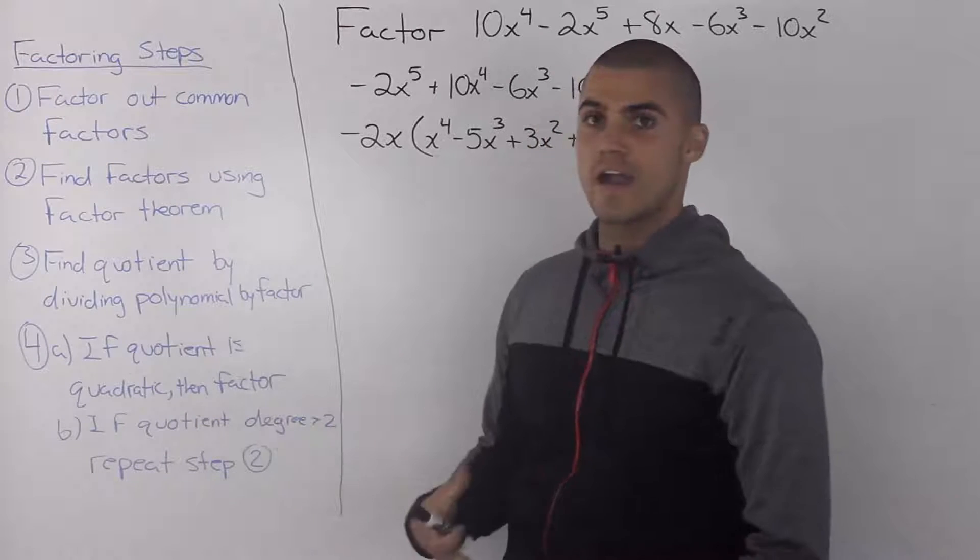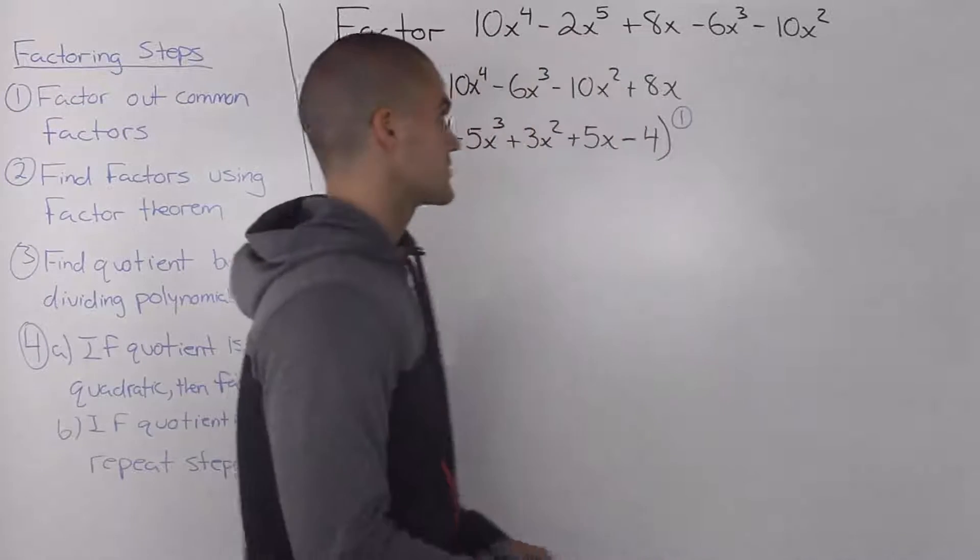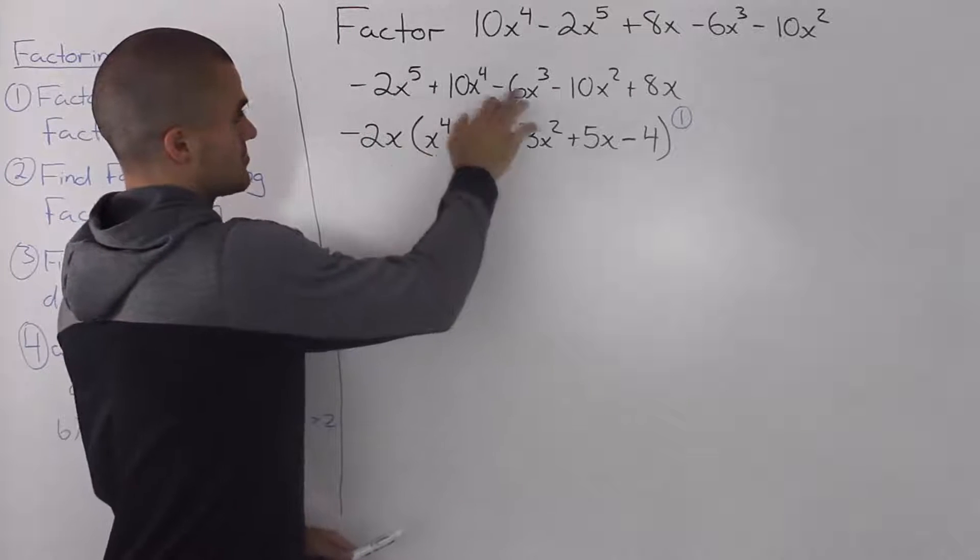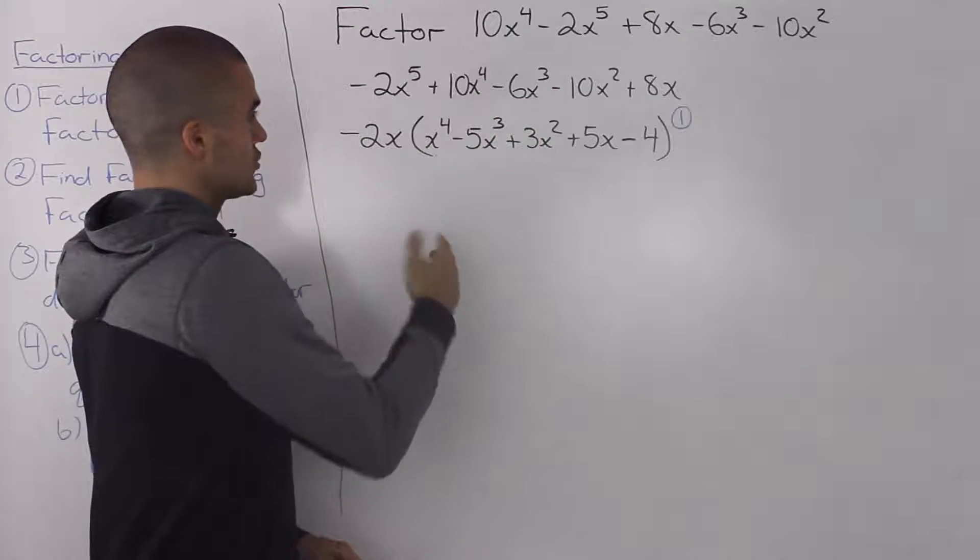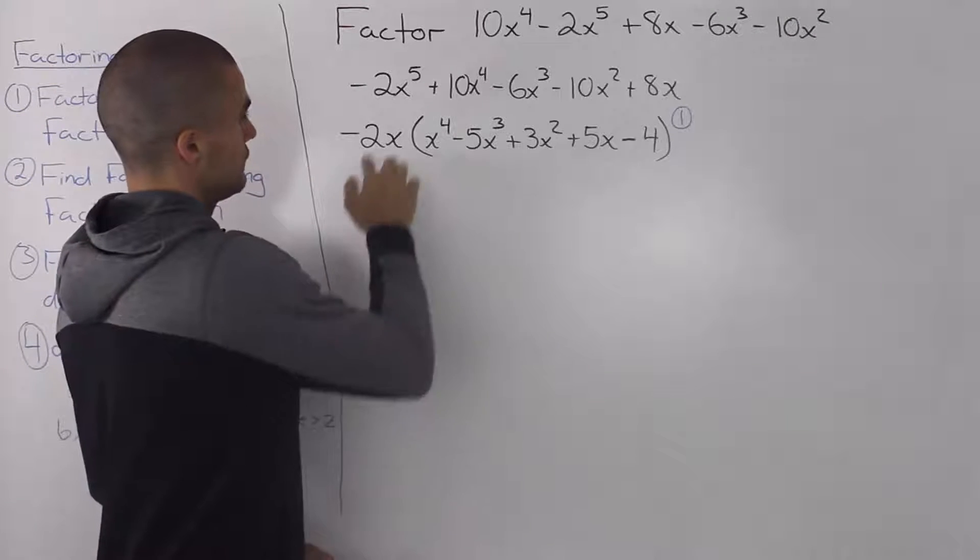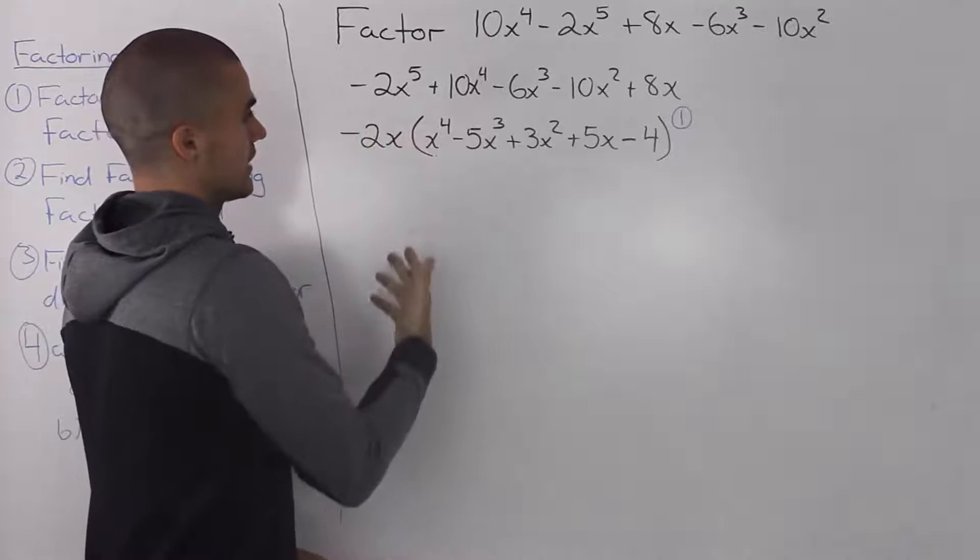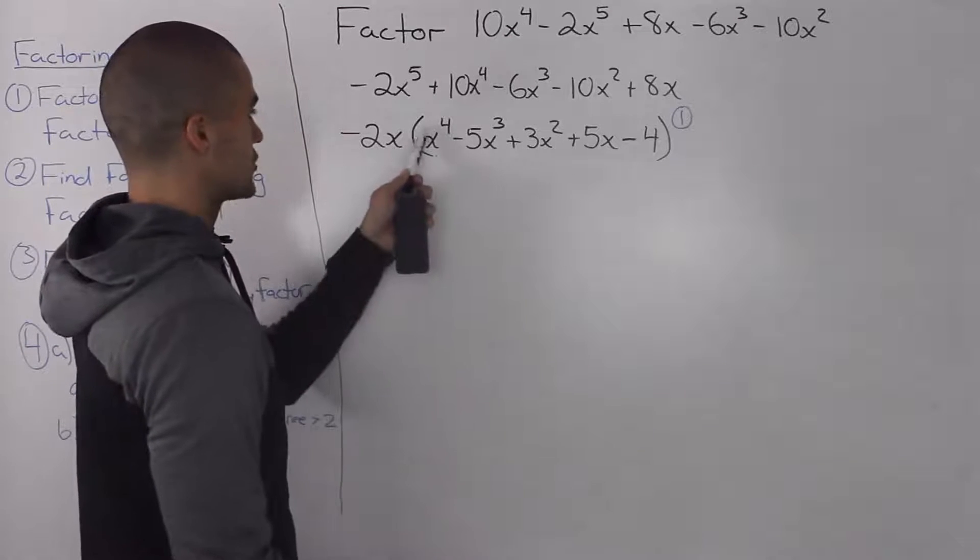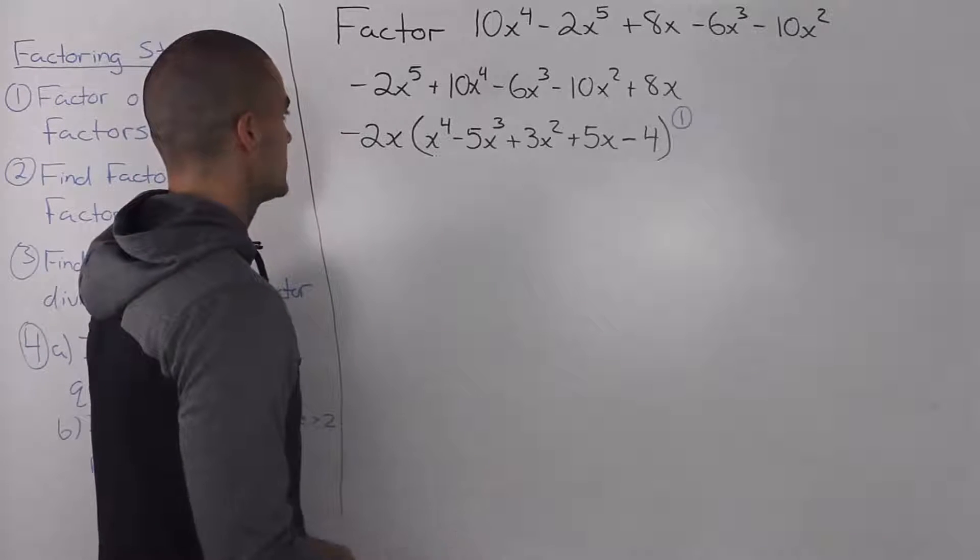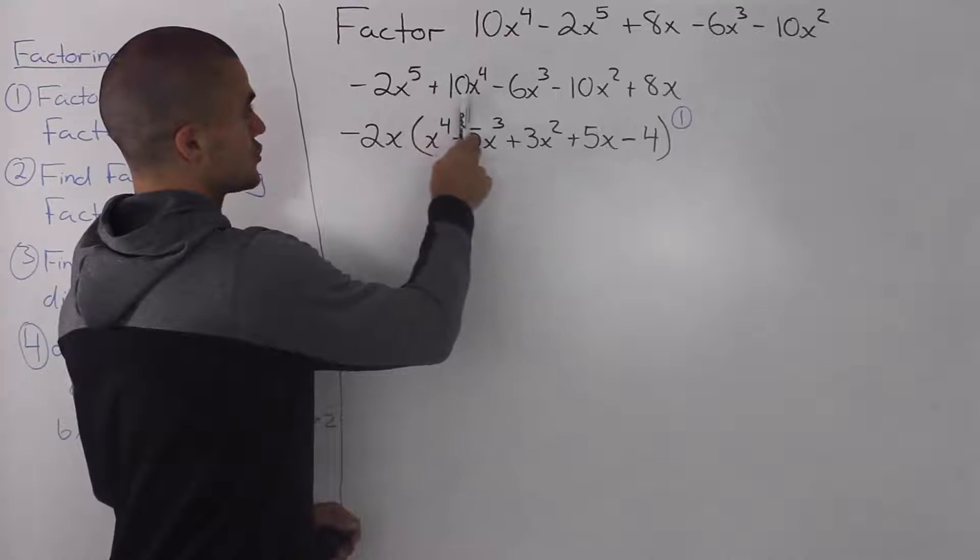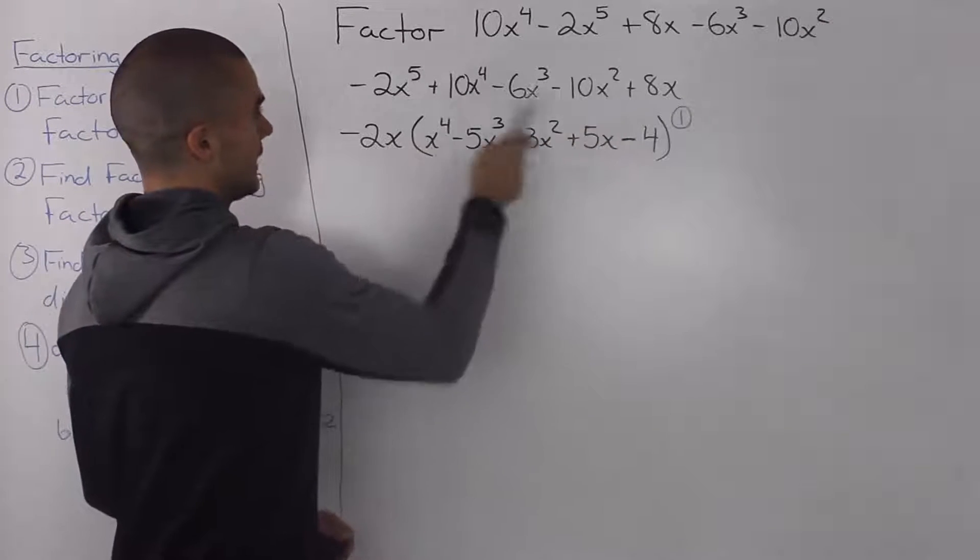So the first step that we take is that we have to factor out any common factors, and a common factor in this polynomial that we could take out initially is this negative 2x. You always want to take out a negative if the leading coefficient is negative, just because working with a positive leading coefficient when factoring is a lot easier.